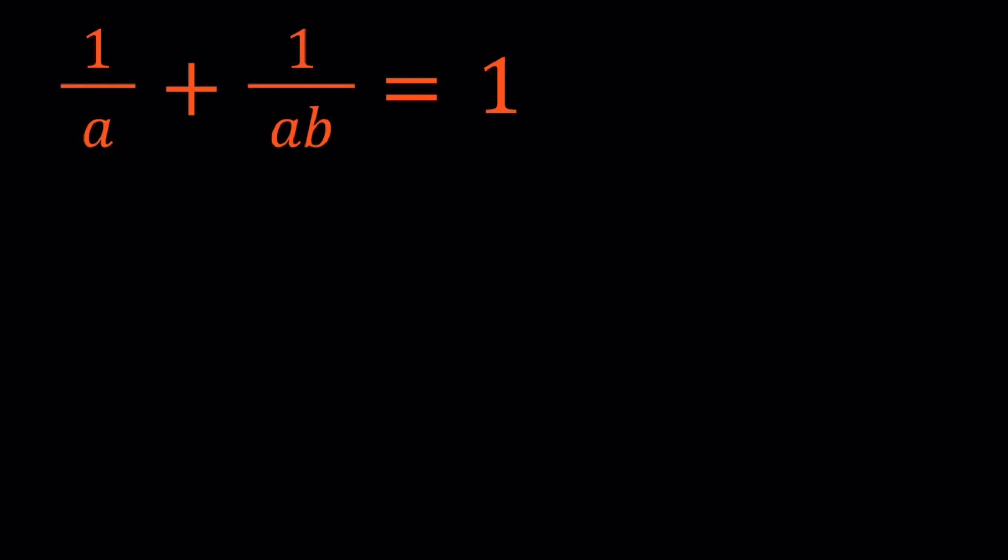Let's go ahead and start by making a common denominator. So how do you make a common denominator? We're going to multiply the first fraction by b. And that's going to give us b plus 1 divided by ab equals 1.